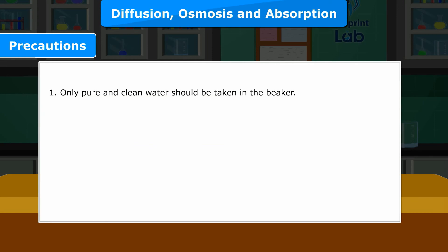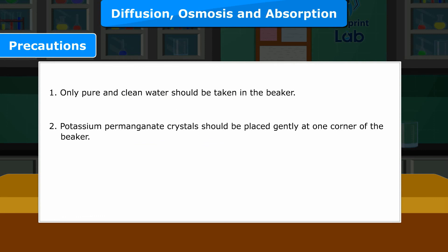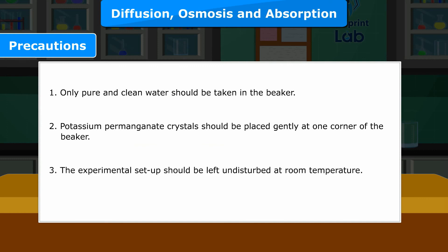Precautions: 1. Only pure and clean water should be taken in the beaker. 2. Potassium permanganate crystals should be placed gently at one corner of the beaker. 3. The experimental setup should be left undisturbed at room temperature.